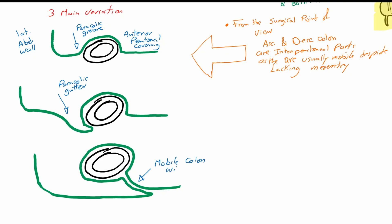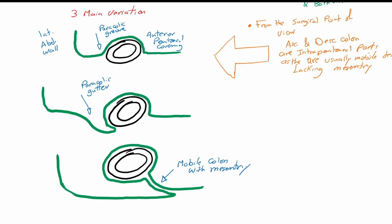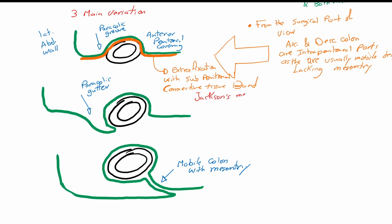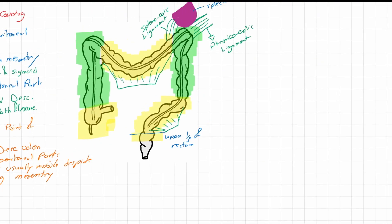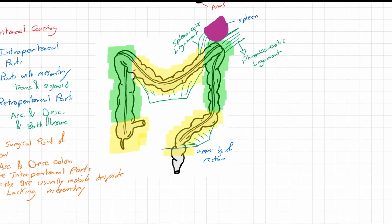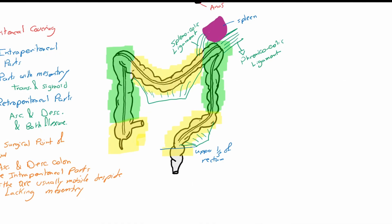Sometimes the ascending and the descending colon are extra-fixed to the retroperitoneal space with Jackson's membrane — an extra fixation with a subperitoneal connective tissue band on the anterior surface of the colon.